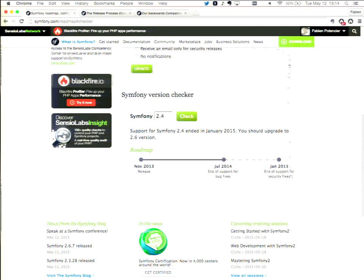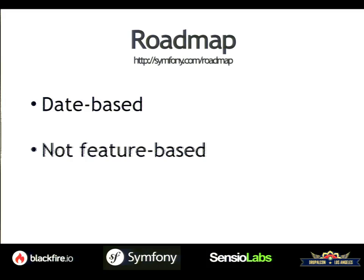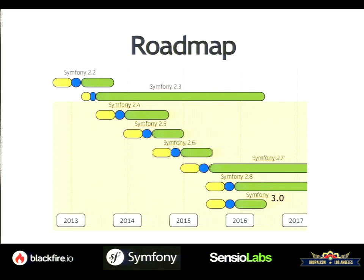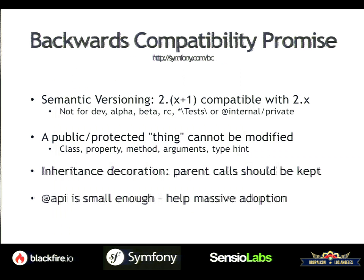You can get all this version information — release dates, end of support, end of security fix support — also as a JSON file so you can integrate it into your tools. We also have a backward compatibility promise. There is a page at symfony.com/bc.